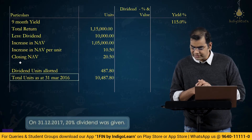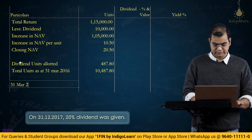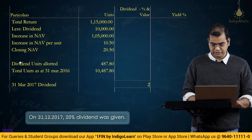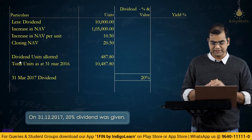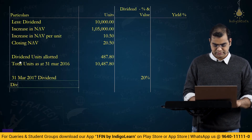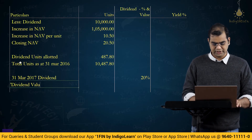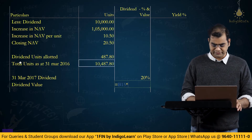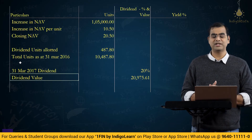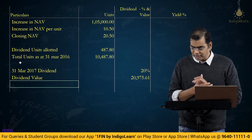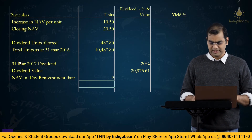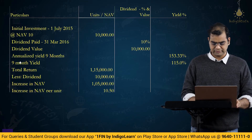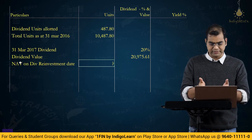On 31st March 2017, the next dividend is 20%. This 20% is on the balance of 10,487.80 units. So dividend value = 10,487.80 units × 20% × 10 rupees face value = 20,975 rupees. These units are also reinvested, but we don't know the NAV on the dividend reinvestment date — that is a question mark.